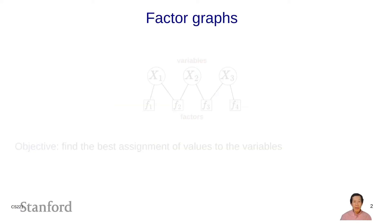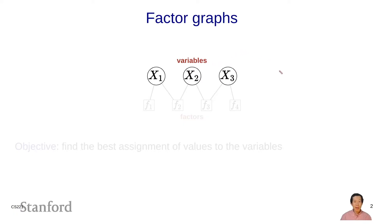The heart of variable-based models is an object called a factor graph. We're going to define factor graphs formally in the next module. But for now, let's give some intuition. A factor graph consists of a set of variables, usually denoted x1, x2, x3, shown in circles. It also contains a set of factors, usually denoted f1, f2, f3, f4, shown in squares. Each factor touches a subset of the variables and expresses some preference or relationship among that subset.